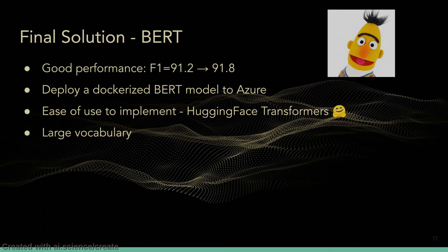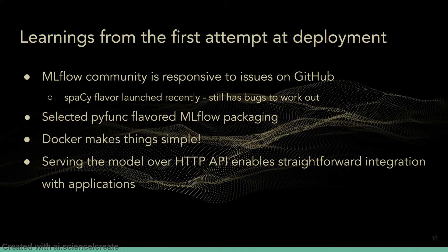We deployed a dockerized BERT model to Azure and found it relatively easy to implement using Hugging Face's Transformers package. Of the three models, BERT had the largest vocabulary, making it more flexible to adapt to new words. When we first tried to deploy spaCy, we ran into some issues, but the community on GitHub was very responsive. The spaCy flavor of MLflow was only recently launched and still had bugs, so we used the generic pyfunc flavor to package our models. Because we used Docker, we did not have a single dependency or environment problem, and API integration with Flask was surprisingly straightforward.